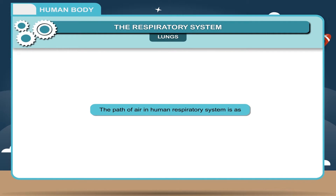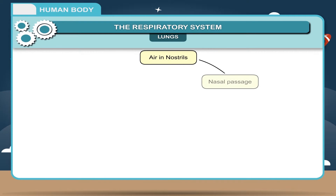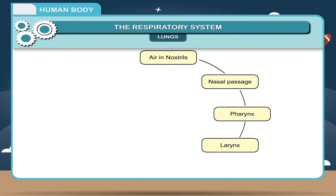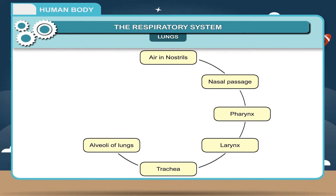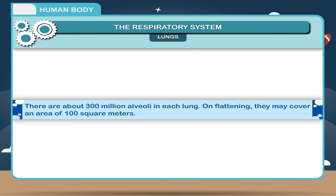The path of air in the human respiratory system is as follows: Air in nostrils → Nasal passage → Pharynx → Larynx → Trachea → Bronchi → Bronchioles → Alveoli of lungs. There are about 300 million alveoli in each lung. When flattened, they may cover an area of 100 square meters.